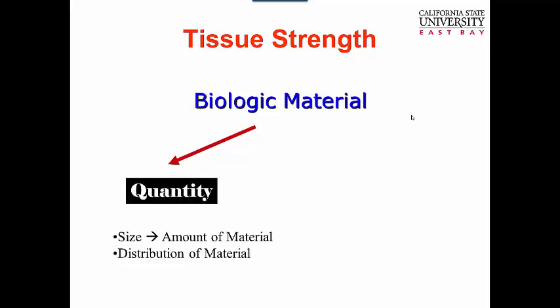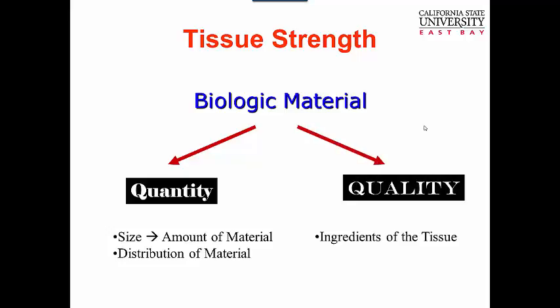Typically the strength of our tissue is due to two factors: the quantity of bone, say, and the quality. The quantity is how big it is and its distribution of material or its architecture — so size and architecture. Quality is what it's made of. Is it good cement, is it bad cement? You can build a bad house out of good bricks, and you can build a beautiful-looking house out of bad bricks — bad ingredients — and it can fall down.